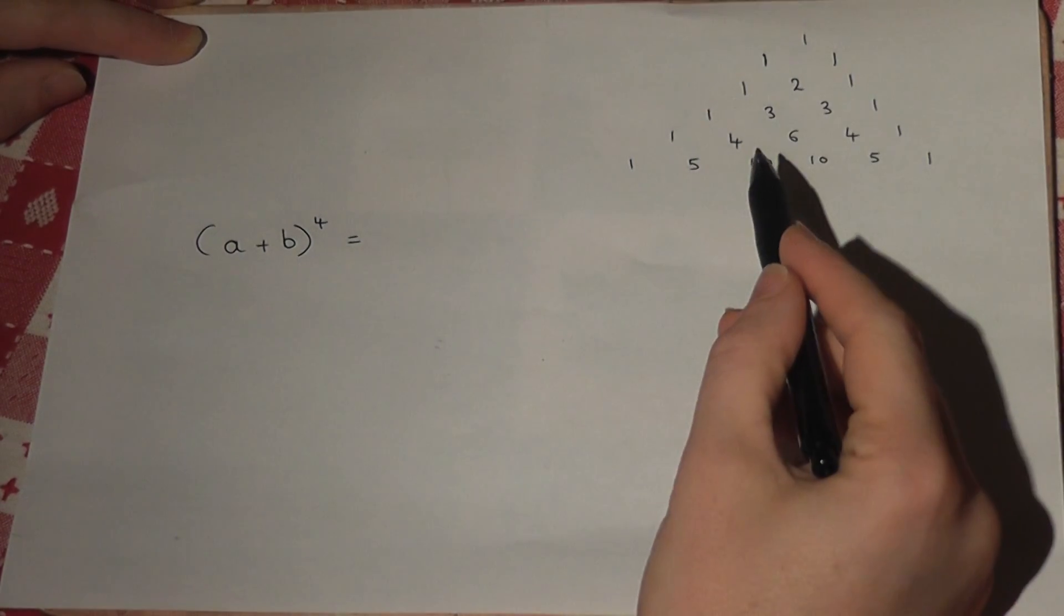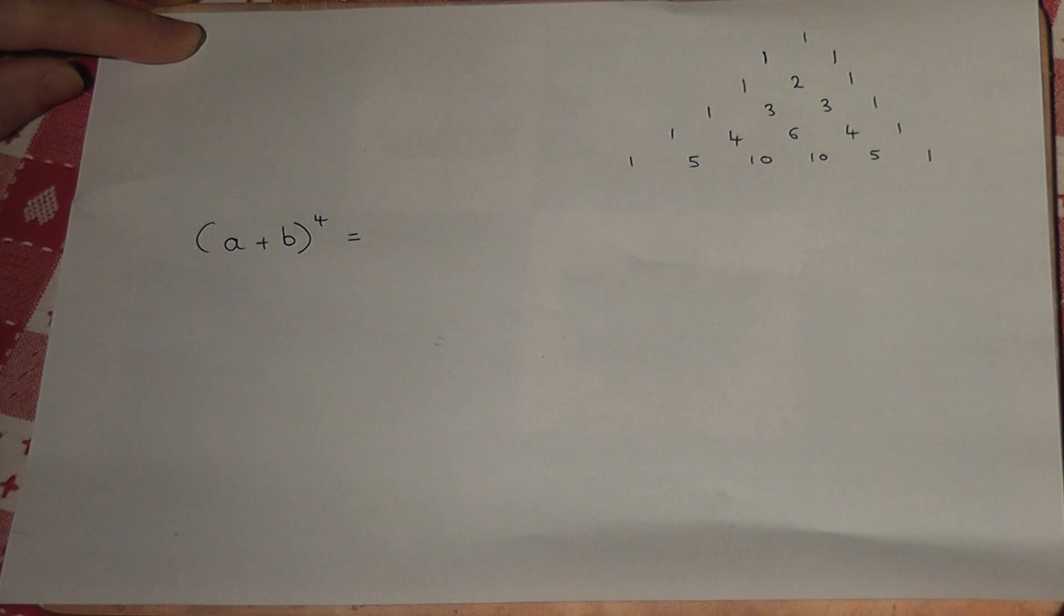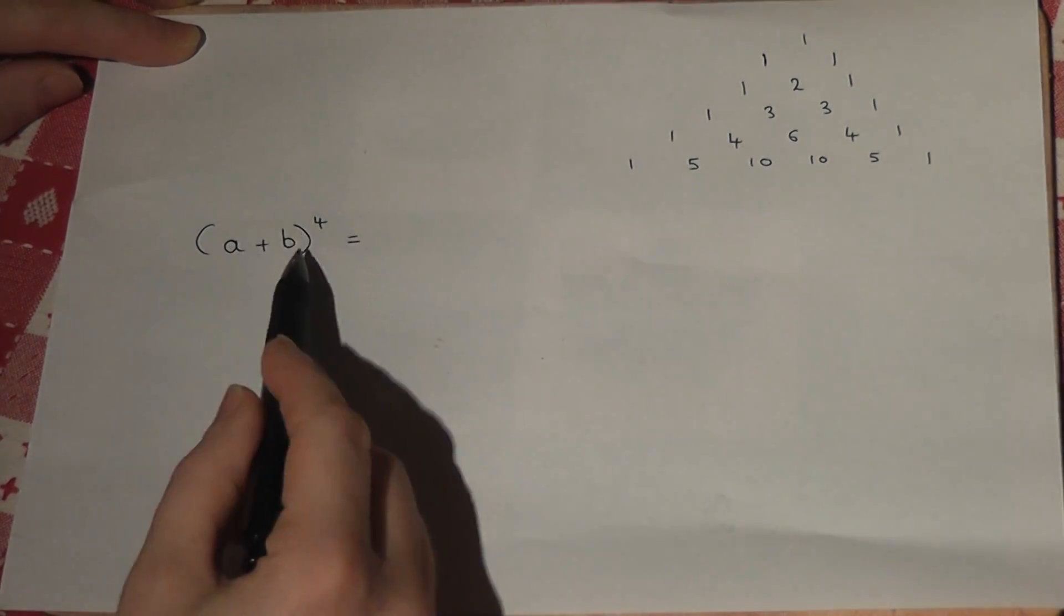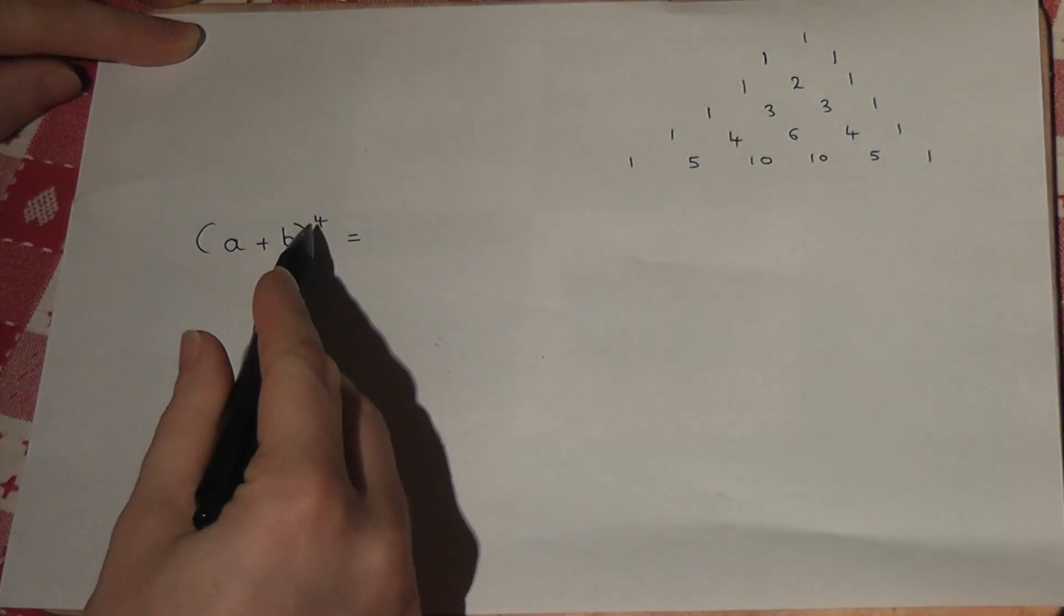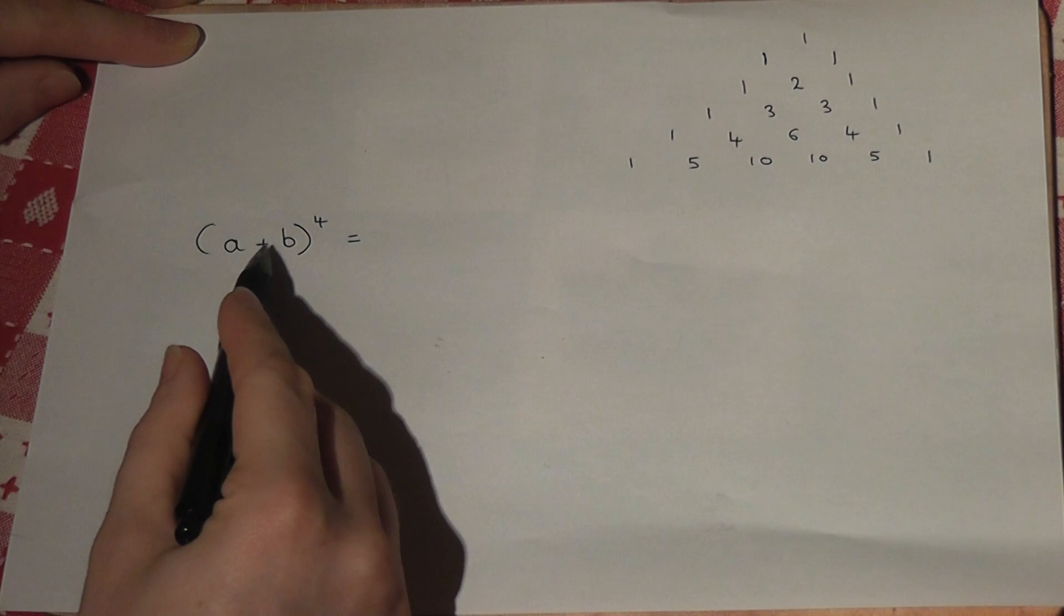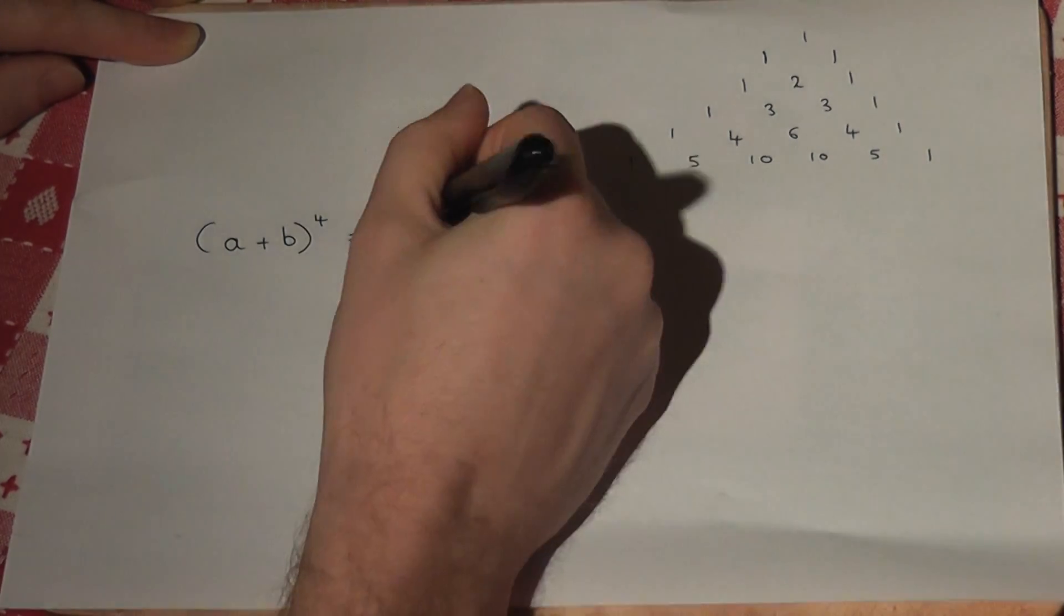Pascal's triangle provides a quick way of expanding brackets with large powers. The trick is to do the following: for (a+b) to the power of 4, we write down a to the power of 4.